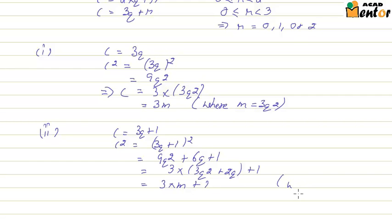Which becomes 3m plus 1, where m is 3q square plus 2q. So which is nothing but 3m plus 1.